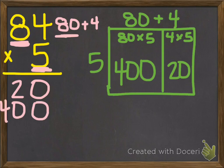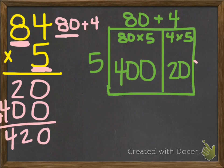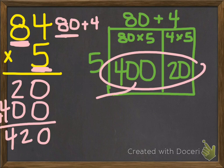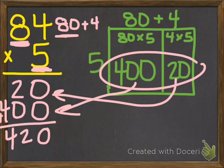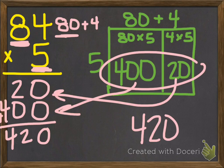This is really important down here that you're making sure that you keep your ones, tens, and hundreds lined up. 0 plus 0 is 0. Then 2. Then 4. And if you come over here, you see that you have the exact same partial products, 420. And if you added those together over here, they would also equal the product of 420.